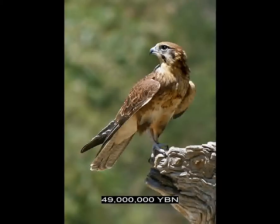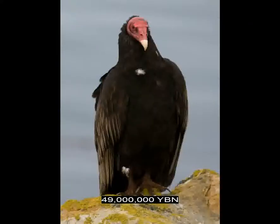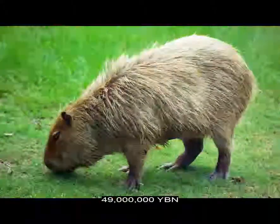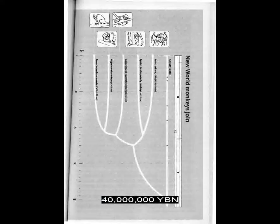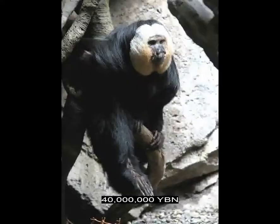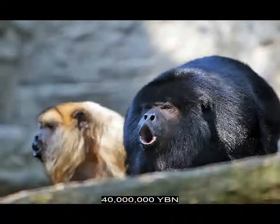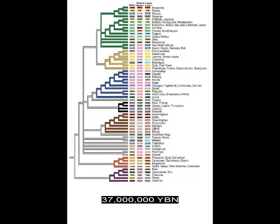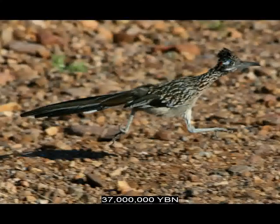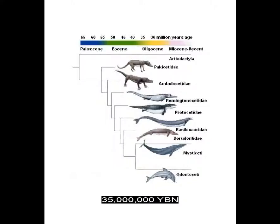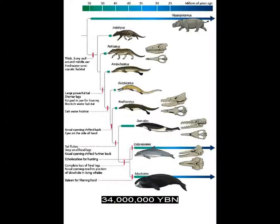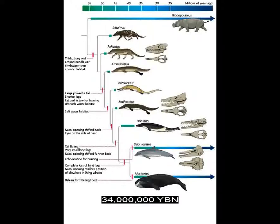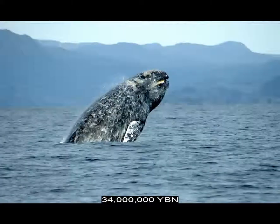Birds Falconiformes: falcons, hawks, eagles, old world vultures. Rodents: new world porcupines, guinea pigs, capybaras. The Alpine mountains start to form. Ancestor of all primates — new world monkeys: sakis, spider, howler and squirrel monkeys, capuchins, and tamarins. Dogs evolve. Birds Cuculiformes: cuckoos and roadrunners. Last common ancestor of dolphins and whales. Toothed and baleen whale lines split — toothed whales include dolphins, sperm, and killer whales; baleen whales include blue, humpback, and gray whales. Cats evolve.